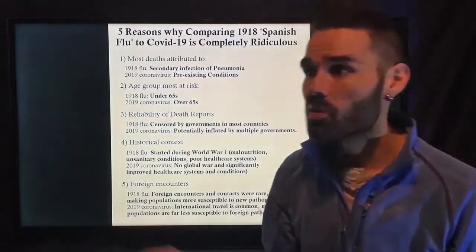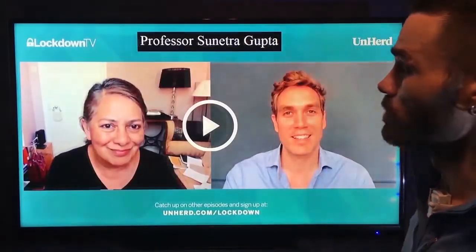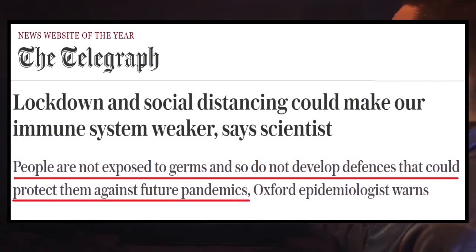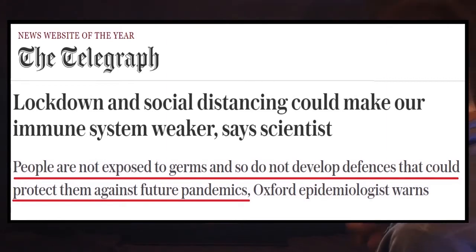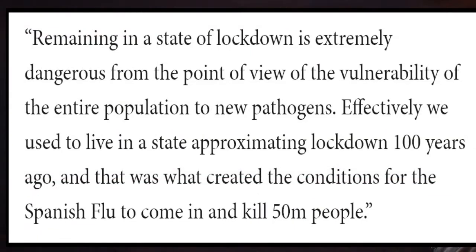Whereas today, international travel is very common — we are all constantly swapping bacteria. The way we overcome COVID-19 or any flu is that we get a slight infection and our immune system learns to fight it off, developing immunity. But back in 1918, they couldn't do that because they encountered each other for the first time at a very large scale. As Professor Sunetra Gupta explains, lockdown and social distancing could make our immune systems weaker. Remaining in lockdown is extremely dangerous for population vulnerability to new pathogens — and effectively we lived in a state approximating lockdown 100 years ago, which created conditions for the Spanish flu to kill 50 million people.